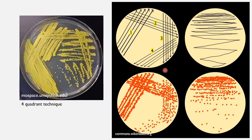For the four-quadrant technique, you have a first, second, third, and fourth zone of inoculation. After incubation, you get isolation in the fourth quadrant, or sometimes in the third if your initial microbial population is low. This depends on your initial microbial population. The zigzag streaking technique can also be performed with a wire loop, not just a swab.